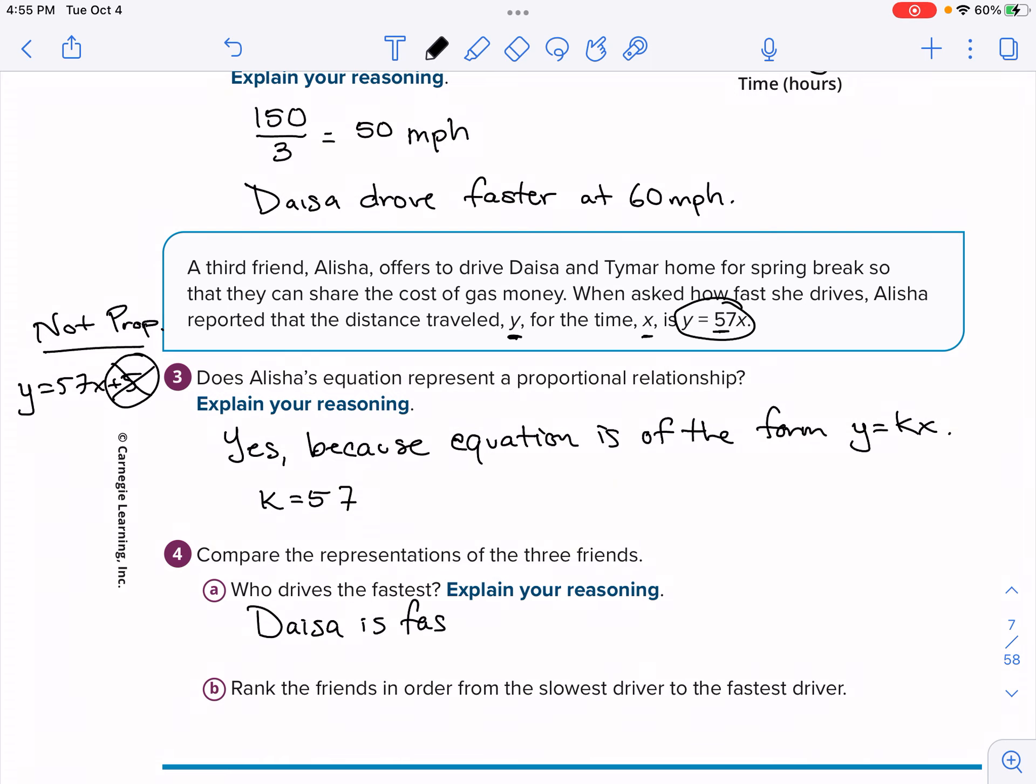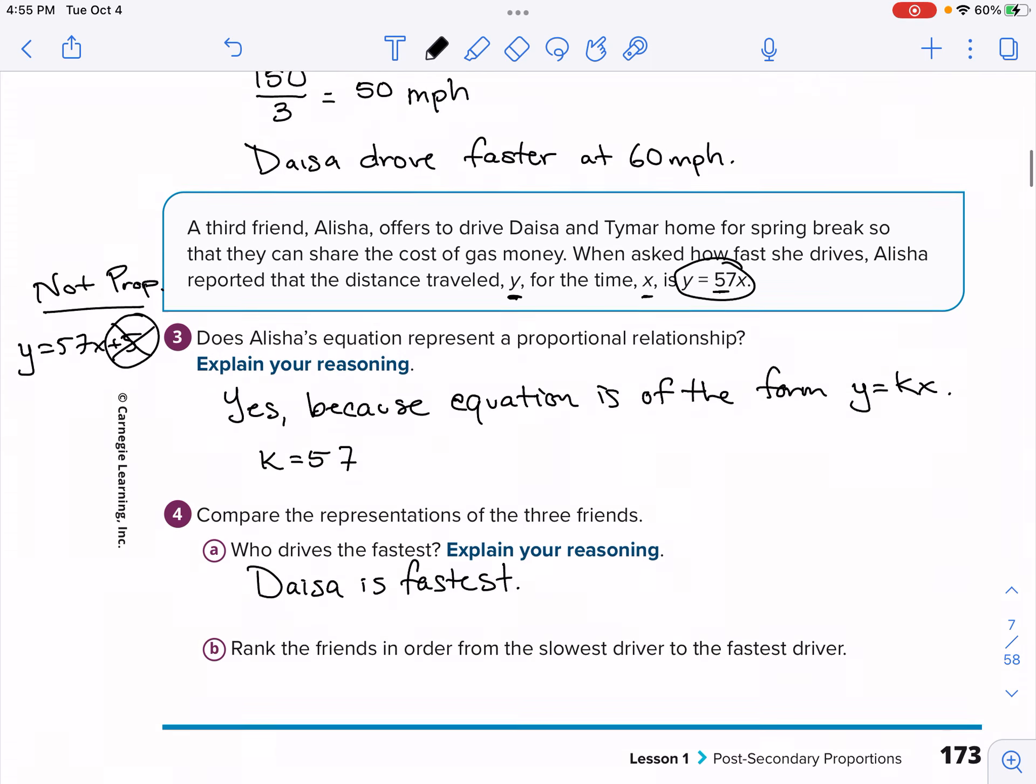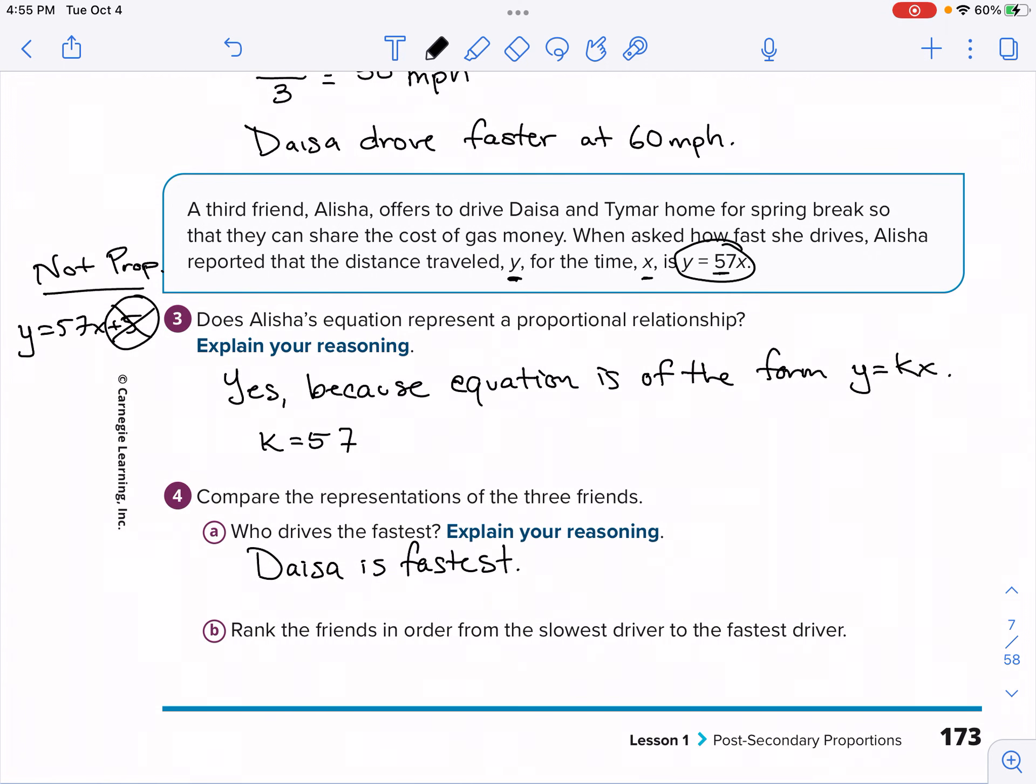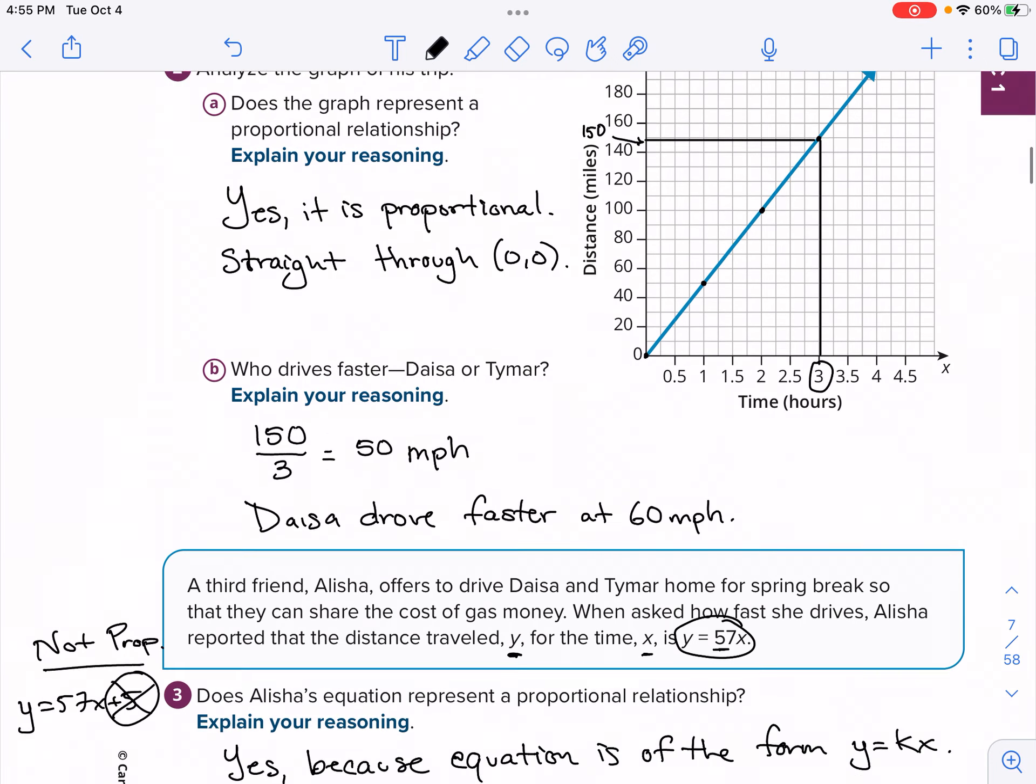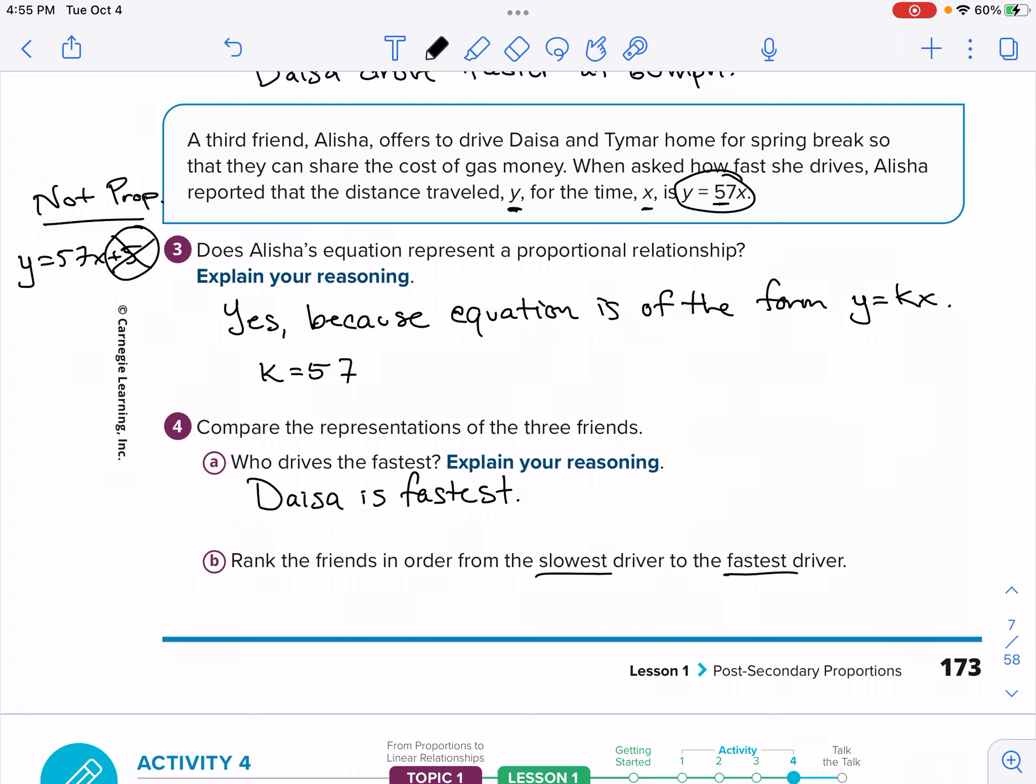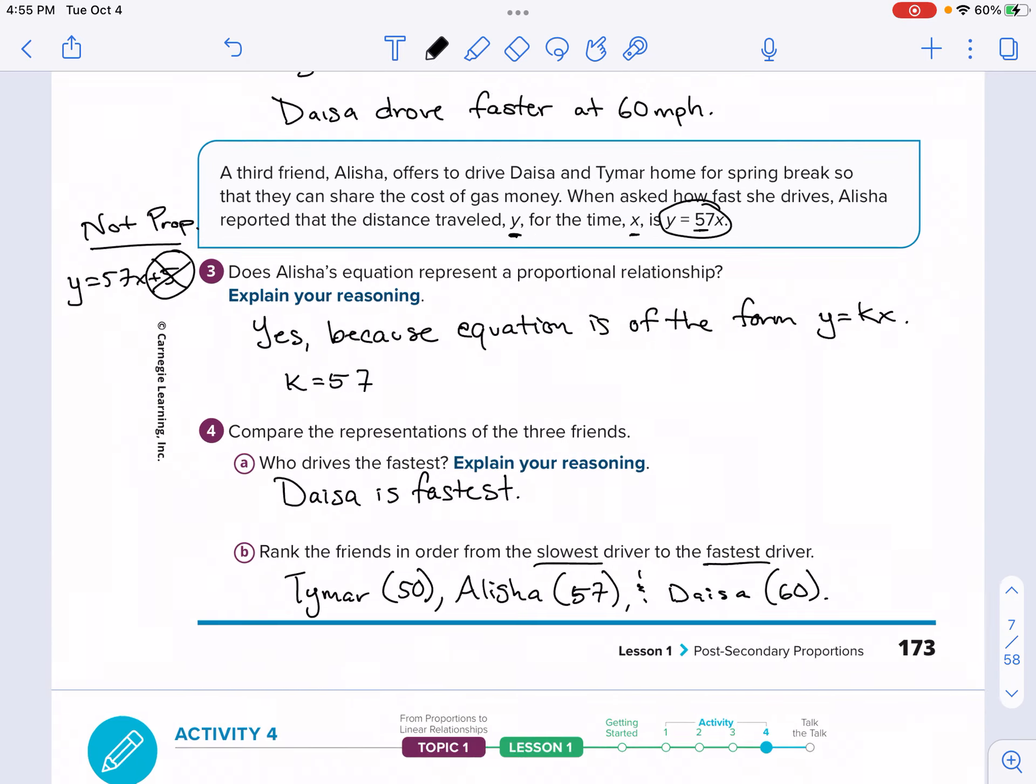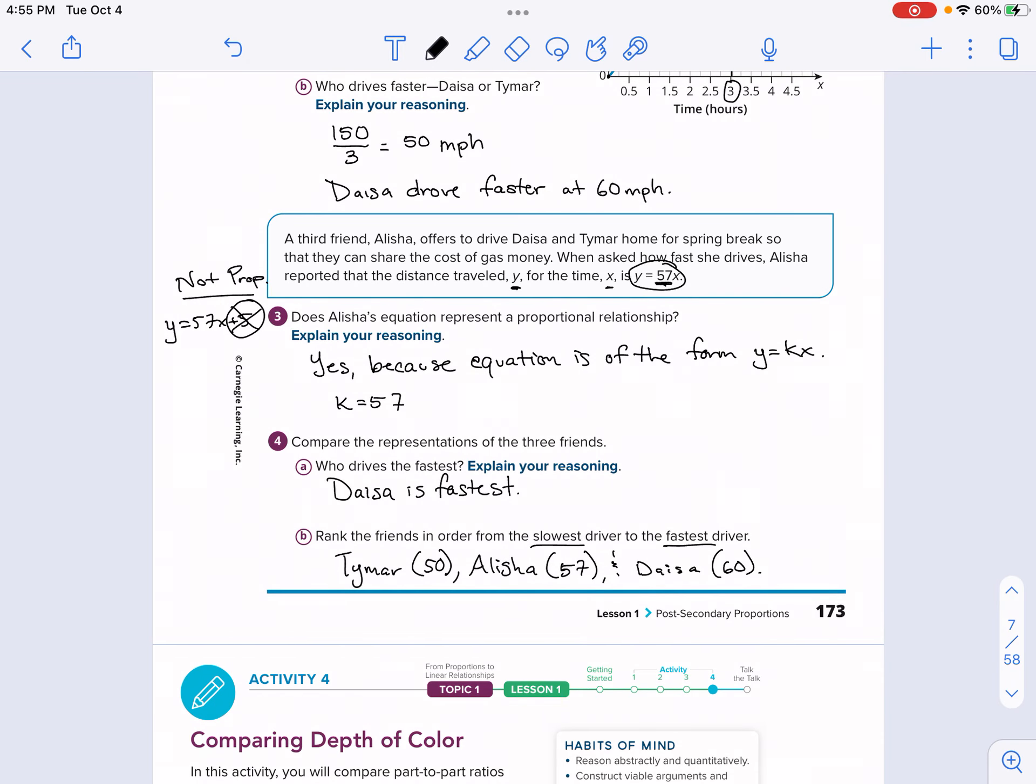So for four, compare the representations of the three friends who drives the fastest. So Daisy is still fastest. Daisy is fastest. But for this, let's go ahead and rank them. So for B, rank the friends in order from slowest to fastest. So Alisha's 57 miles an hour. Daisy is 60 miles an hour and Tamar is 50 miles an hour. So we're going to say Tamar 50, then the next one is Alisha that is 57. And then it is Daisy at 60 miles an hour.